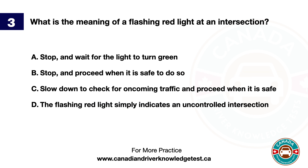Question 3. What is the meaning of a flashing red light at an intersection? A. Stop and wait for the light to turn green. B. Stop and proceed when it is safe to do so. C. Slow down to check for oncoming traffic and proceed when it is safe. D. The flashing red light simply indicates an uncontrolled intersection. The answer is B. Stop and proceed when it is safe to do so.